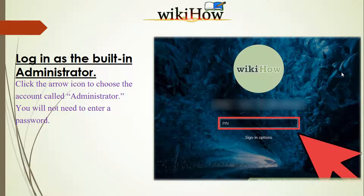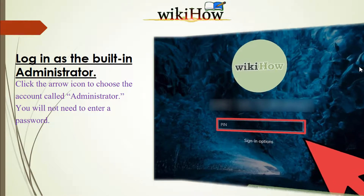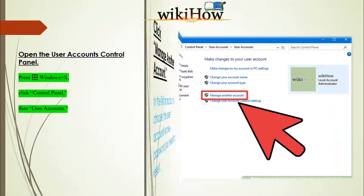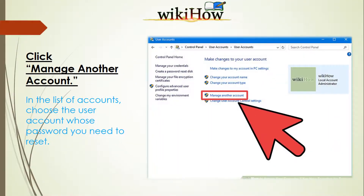Log in as the built-in administrator. Click the arrow icon to choose the account called Administrator — you will not need to enter a password. Then open the User Accounts control panel by pressing Windows + X, clicking Control Panel, then User Accounts.